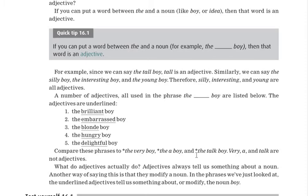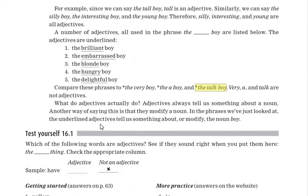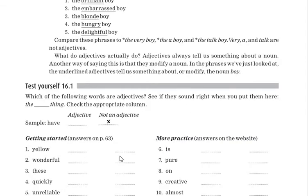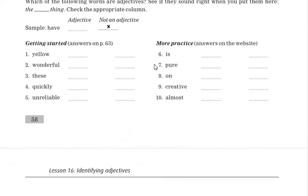Exercise 16.1 asks which of the following words are adjectives. Use the same trick: 'the ___ boy'. For example, can we say 'the yellow shirt'? Yes — so 'yellow' is an adjective. Can we say 'the is notebook'? No — so 'is' is not an adjective.